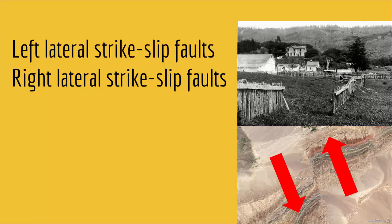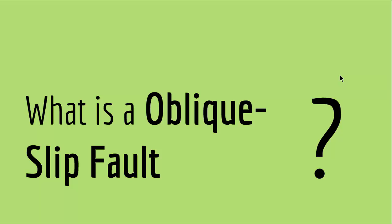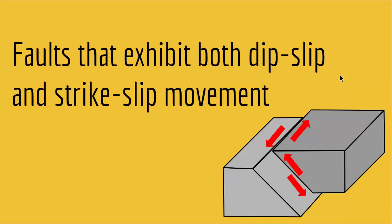The last type of fault is oblique slip faults. Oblique slip faults are faults that exhibit both dip slip and strike slip movement. So we have dip slip faults, strike slip faults, and oblique slip faults.